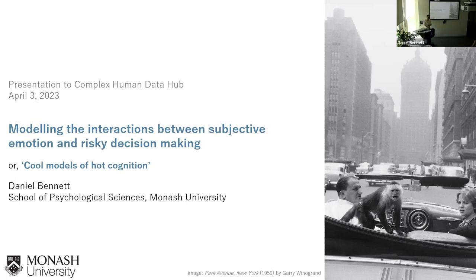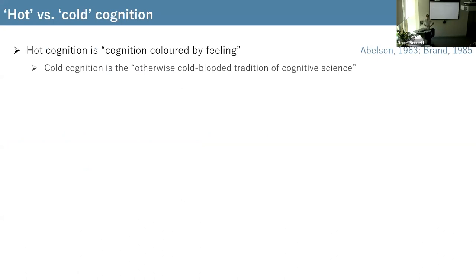What I'm going to be talking about today is some attempts to use the techniques and tools of computational cognitive science to answer questions that haven't traditionally fallen within its purview — specifically, modeling the interactions between subjective emotion and risky decision-making. This idea of hot cognition comes from a distinction originally drawn in 1960s–1980s social psychology, which distinguished hot cognition from cold cognition. Cold cognition was everything cognitive psychologists were studying in the laboratory — memory, decision-making, learning — while social psychologists argued that a lot of real-world cognition is hot, colored by feeling.